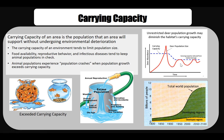Reproductive lag time may cause the population to overshoot the carrying capacity temporarily. Reproductive lag time is the time required for the birth rate to decline and the death rate to increase in response to resource limits. In this scenario, the population will suffer a crash or dieback, as shown here.